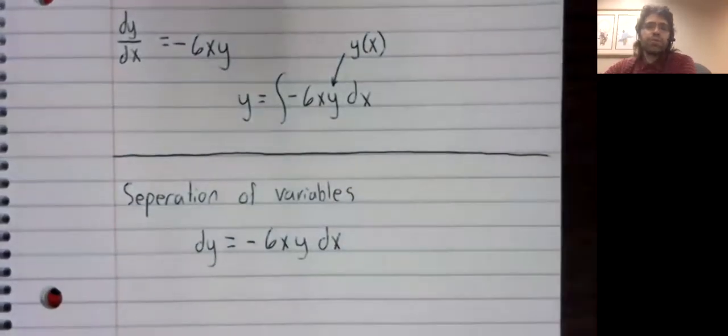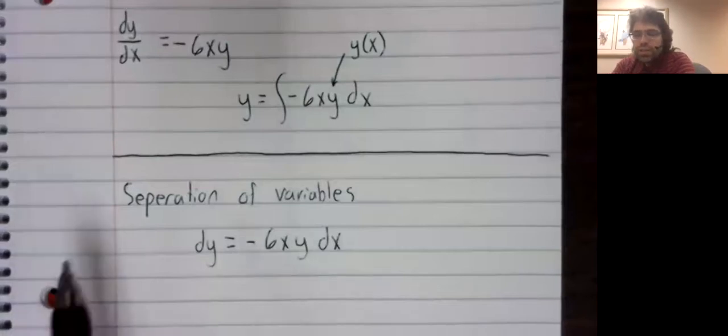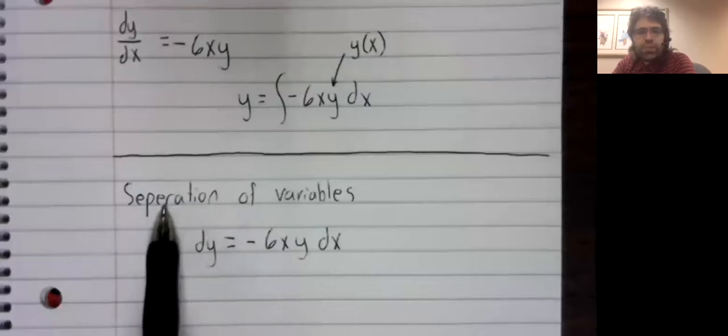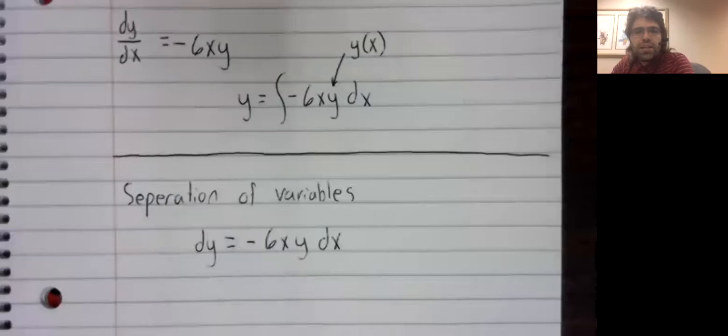And you have two variables, x and y. Y is a function, but another way of thinking of that is that y is a dependent variable. And this name separation of variables comes from the idea that we're going to get our y's on one side of the equation and our x's on the other. We're going to separate them out.